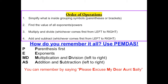The order of operations tells us that first, we have to simplify anything that's in parentheses. Then, we want to simplify any exponents. Next, we would do any multiplication or division, whichever comes first from left to right. So you don't have to multiply before divide — you do whichever one comes first.